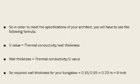So in order to meet the specifications of your architect, you will have to use the following formula: U-value equals thermal conductivity divided by wall thickness. So wall thickness equals thermal conductivity of the selected AAC blocks, which is 0.15, divided by the U-value specified by your architect, which is 0.65. Here we get the wall thickness you should have for your bungalow: 0.23 meters, which is 9 inches.